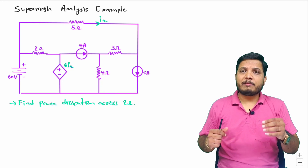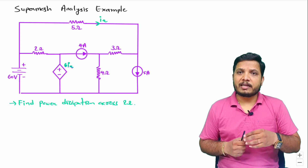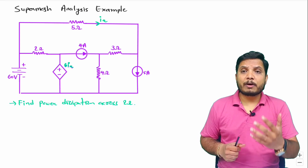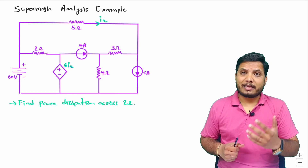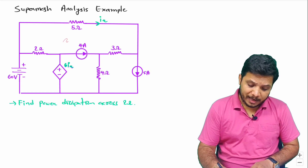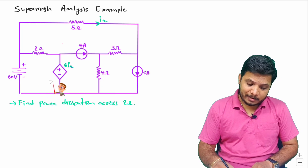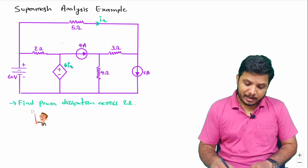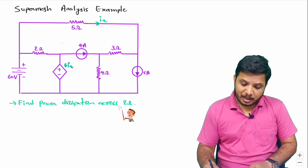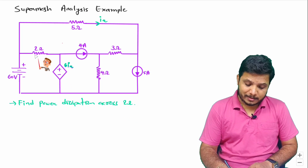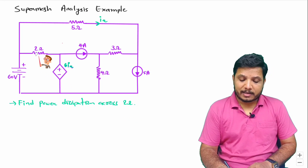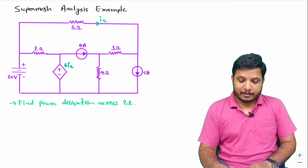So here we will be applying mesh analysis. After that, I'll explain how we can apply super mesh analysis. In this circuit, we are asked to find the power dissipation across the 2-ohm resistance — how much power is getting dissipated.